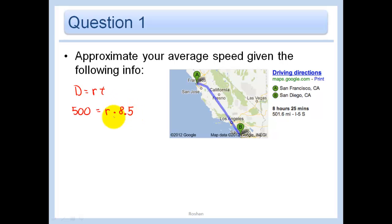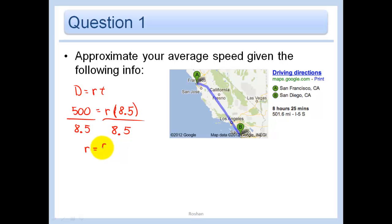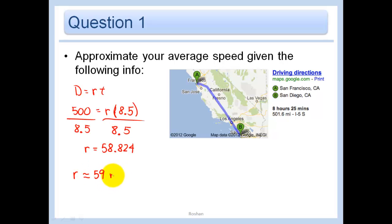So how are we going to solve this? Let's divide both sides by 8.5. And what do we get? 58.824, rounded to 3 decimal places. But that's not really accurate to 3 decimal places since we're approximating, so let's say our rate is approximately 59 miles per hour.